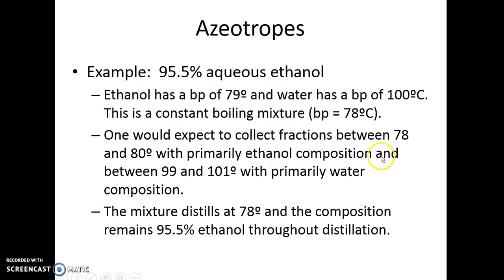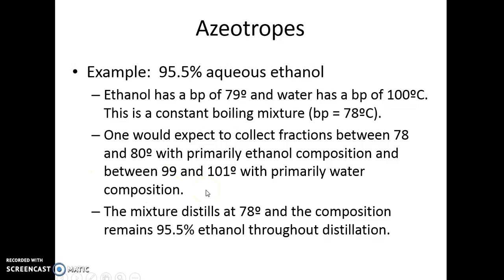You don't get any separation like you do with a mixture of most compounds. If you were distilling two compounds with these boiling points, you would expect a majority of the lower boiling around 79 and then a majority of the upper boiling around 100. But that doesn't happen. What happens is the first drop that comes over is 95.5% ethanol, and until either ethanol or water runs out, 95.5% ethanol distills over. That is what's caused an azeotrope.